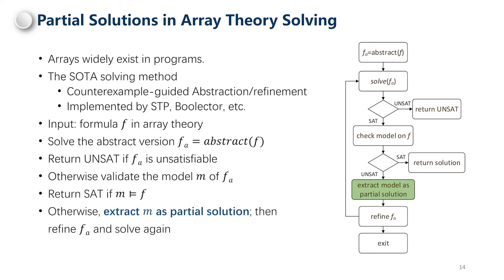Arrays widely exist in programs and reasoning about arrays is expensive. The state-of-the-art solving method is the counter-example guided abstraction refinement framework, implemented in solvers such as STP. The input is a formula F in array theory. The algorithm neglects array axioms and generates an abstract version FA, then invokes the sat solver to find a model for FA or disprove it. If FA is unsatisfiable, then F is unsatisfiable too. Otherwise, the sat solver returns a model of FA. We validate the model on F. If M implies F, we find the solution. Otherwise, the algorithm checks which axioms are violated and refines FA by adding axioms. Just before refinement, we can extract the model M as partial solutions.